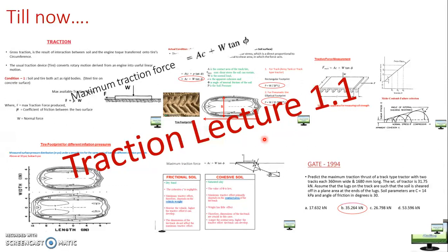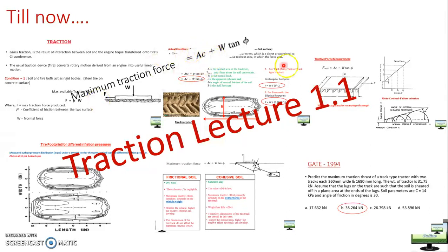Clay soil has very small particle size, so there is a low void ratio and high intermolecular force of attraction. Sandy soil has high particle size and less intermolecular force of attraction. For clay soil, tire footprint area is of prime importance for traction, whereas for sandy soil, the weight of the tractor is of prime importance. If you take your tractor in sandy areas, weight matters; in mud, clay, or black cotton soil, tire footprint area matters — so deflate your tire or use tracks for better traction.